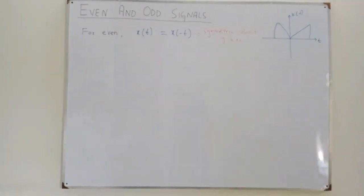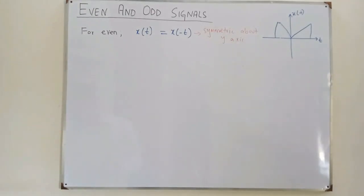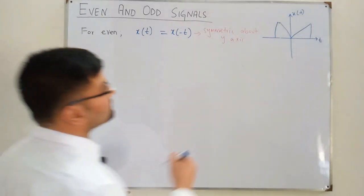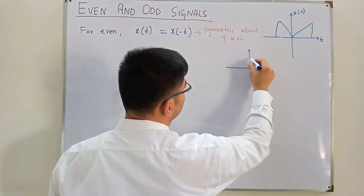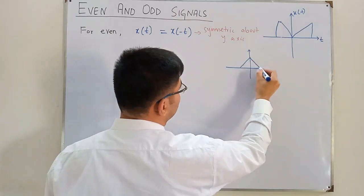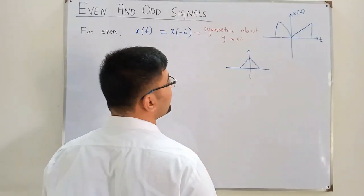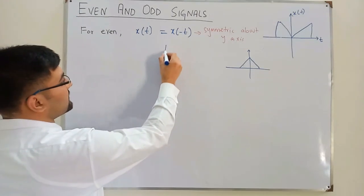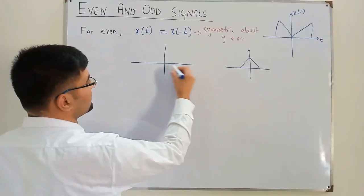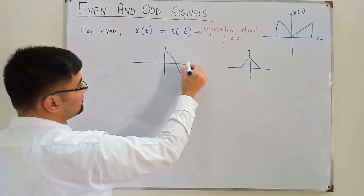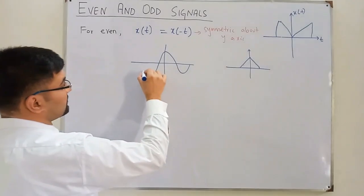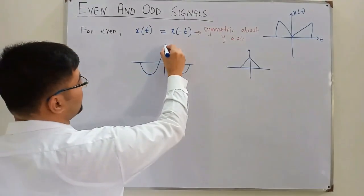That is for the even signal. You can have other examples as well. For instance, the cosine wave is an even function — if you time reverse the cosine wave, it remains identical. The cosine wave is a classic example of an even function.